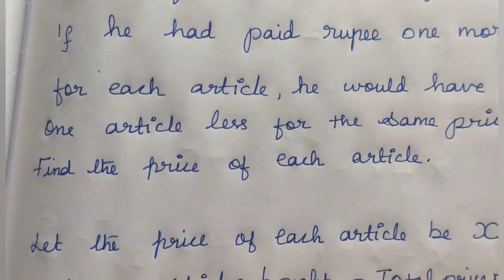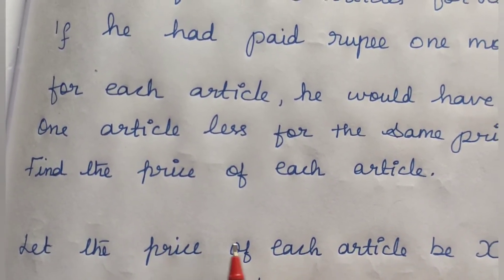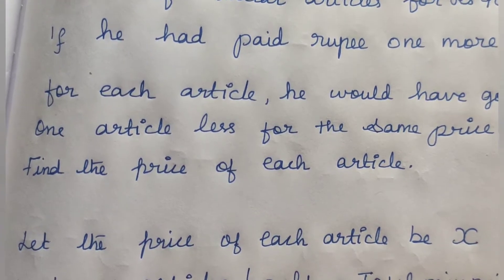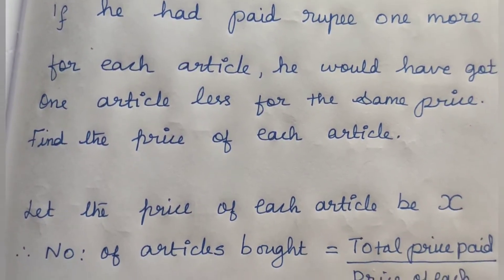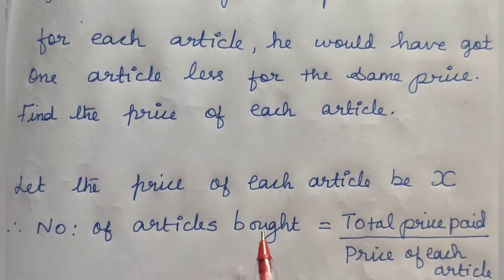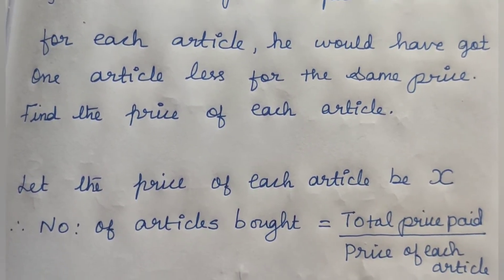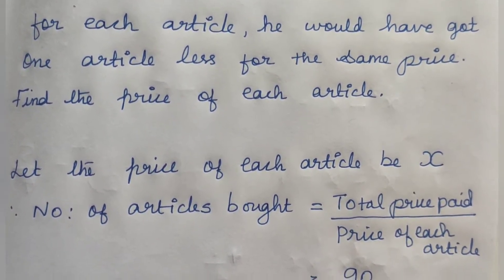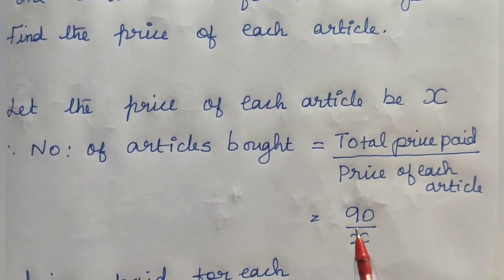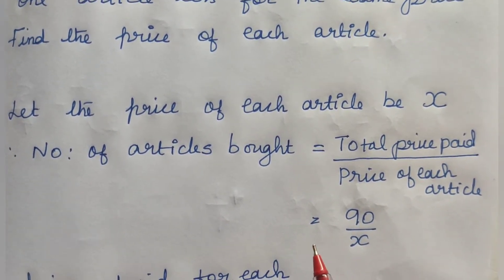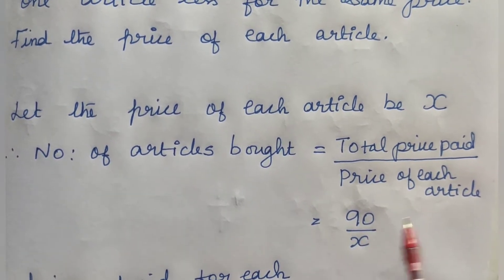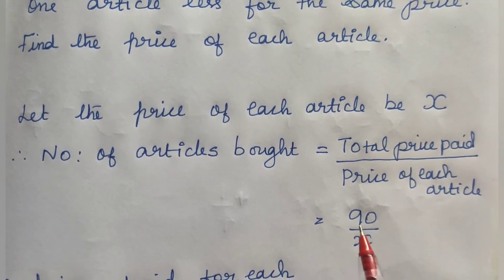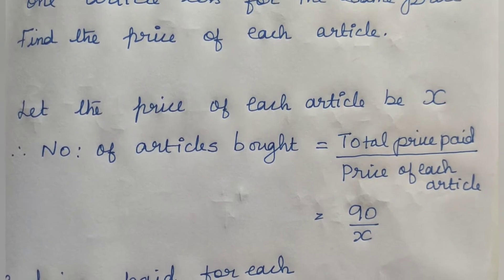Let us assume the price of each article be X. So totally he paid Rs. 90. If the price of each article is X, then the number of articles bought equals total price paid divided by price of each article, which is 90 divided by X.